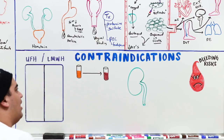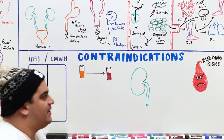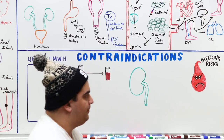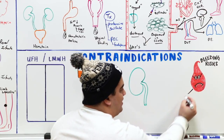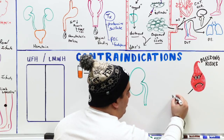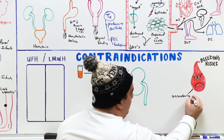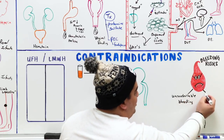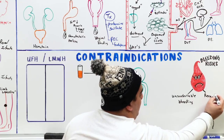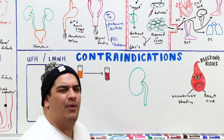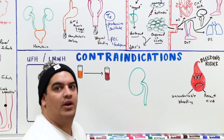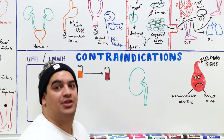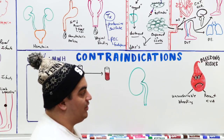Contraindications: you don't want to give heparin to someone who has uncontrollable bleeding for any reason. If someone just recently had a CVA, you cannot give heparin — because giving heparin after an ischemic stroke can convert it into a hemorrhagic transformation, which is very serious.